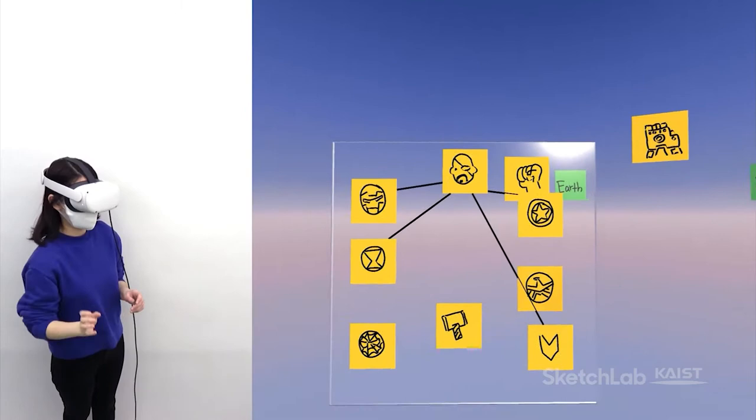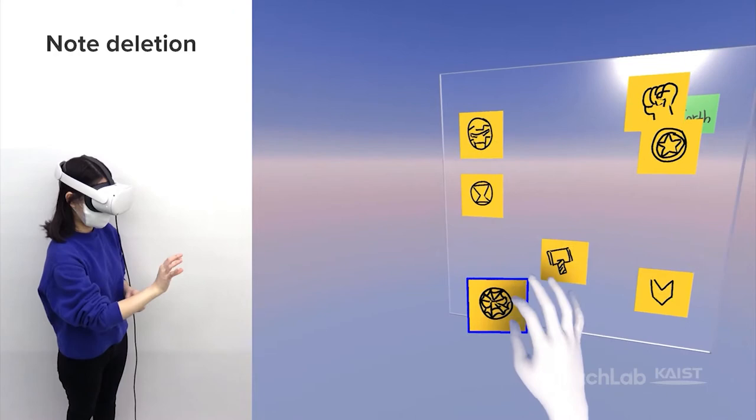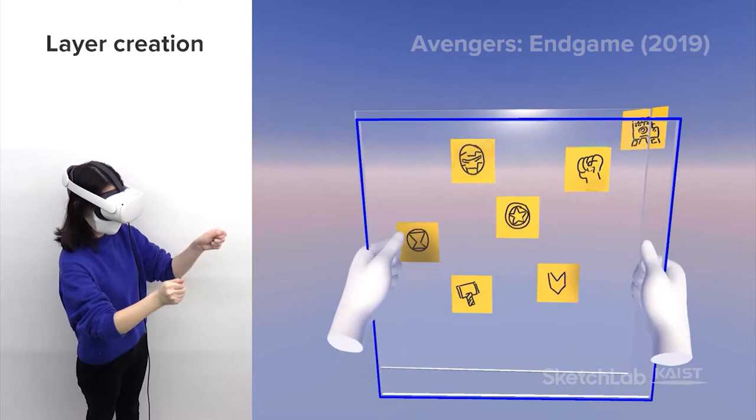However, Thanos finally snaps his fingers, and half of the population including Nick Fury, Falcon, and Spider-Man turn into dust and fall to the ground. The remaining Avengers travel to a parallel universe to undo the finger snap.